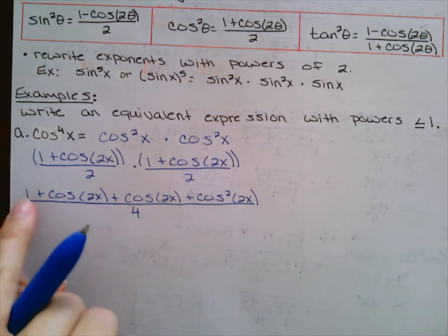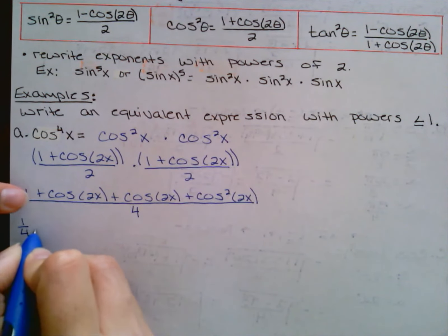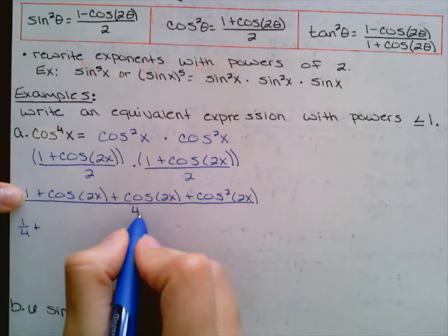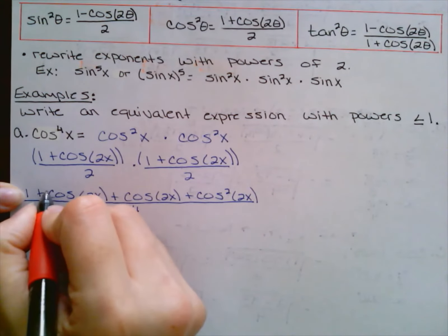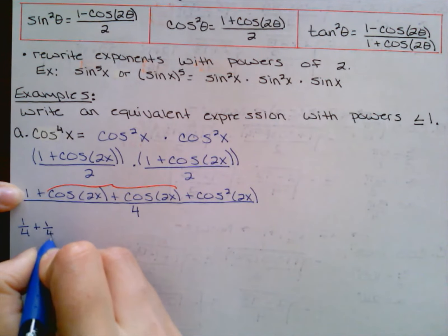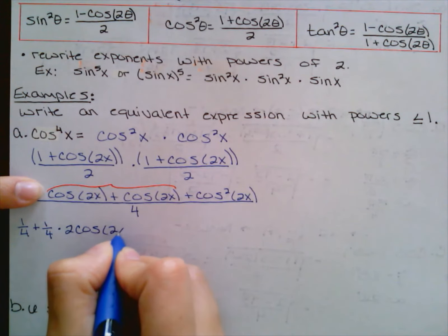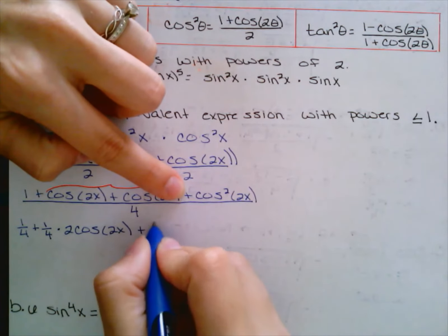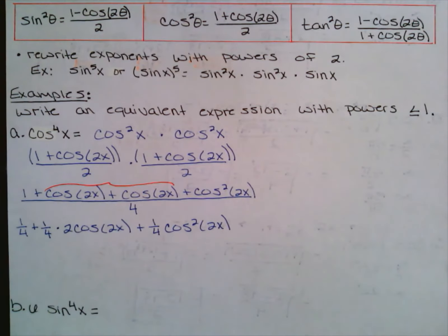All of this is over two times two, which is four. Now I'm going to split this up a little bit. This denominator four belongs to all of them, so to make our lives easier, I'm going to call this one-fourth, plus — these two cosine of two x terms combine — so one-fourth times two cosines of two x, plus one-fourth times cosine squared of two x.